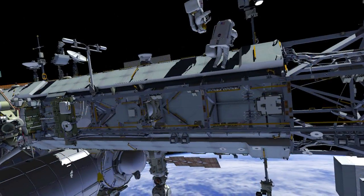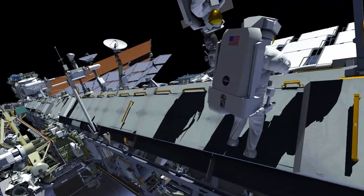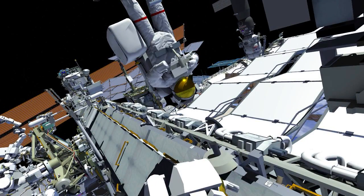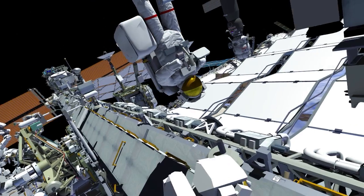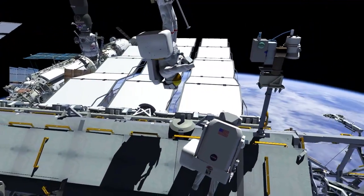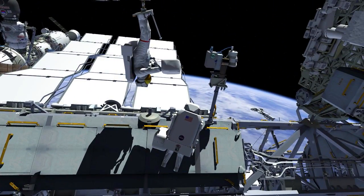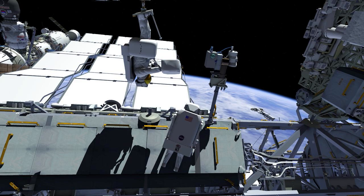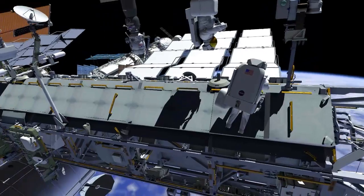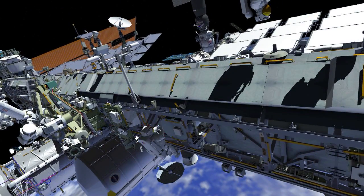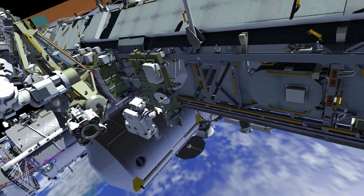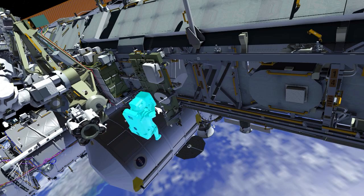EV2 meets EV1 at the camera port 8 worksite after retrieving the new wireless access port capable external high definition camera from the crew lock. The two crew members exchange tool bags, after which EV2 takes EV1's tool bag back to the crew equipment translation aid cart and stows it.